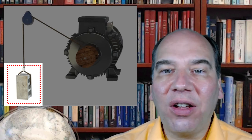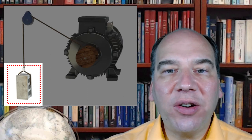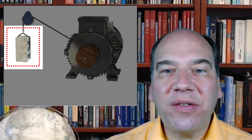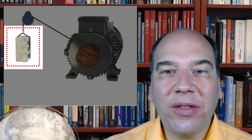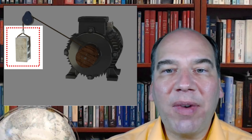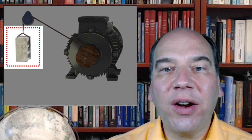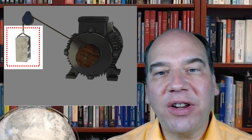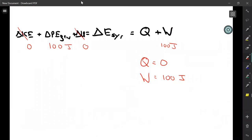Ten joules goes into the rusty pulley, but the system — we don't know anything about that; it's all out in the surroundings. All we know is that the system's gravitational potential energy increased by 100 joules, and it was a 100-joule work interaction with the surroundings. All that business about the rusty pulley is in the surroundings. We drew a red box — that's our boundary. System and surroundings; there was a 100-joule work interaction.